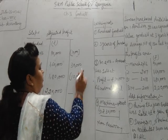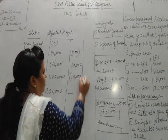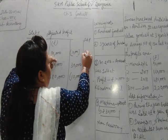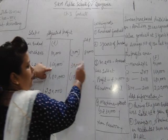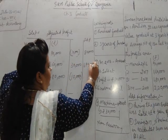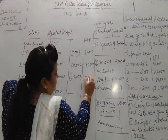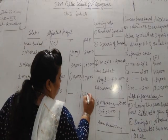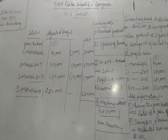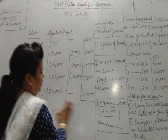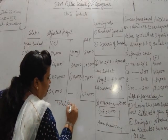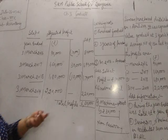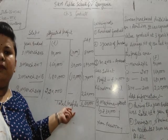Now we will calculate the adjusted profits. For 2016: 90,000 minus 10,000 equals 80,000. For 2017: 1,60,000 plus 30,000 equals 1,90,000. For 2018: 1,80,000 minus 10,000 equals 1,70,000. For 2019: 2,20,000. The total adjusted profit for the four years is Rs. 6,60,000. This is the total profit after all necessary adjustments.